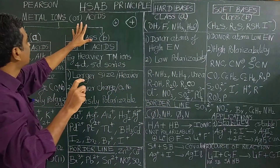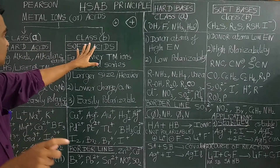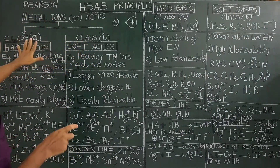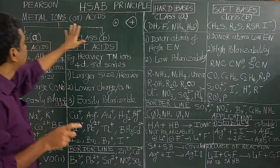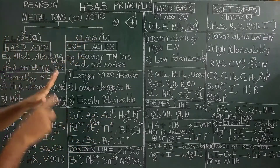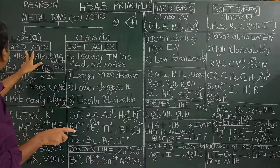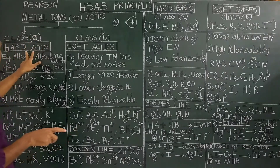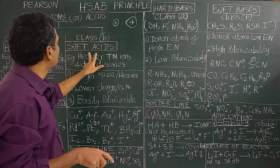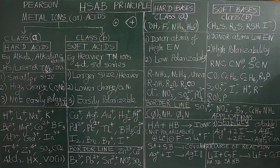Metal ions, which are acids, are classified into two types according to the HSAB concept: Class A and Class B. Class A metal ions are called hard acids. Class B metal ions are called soft acids.